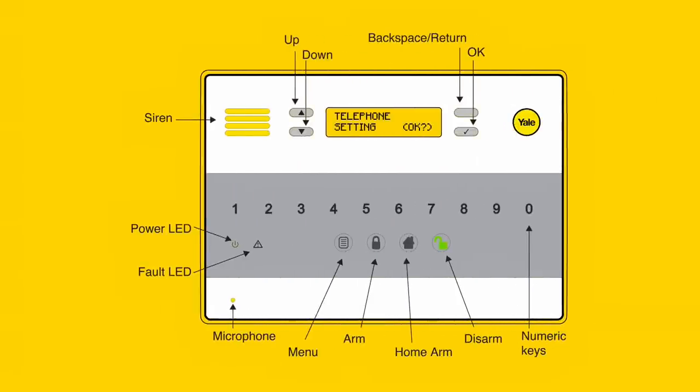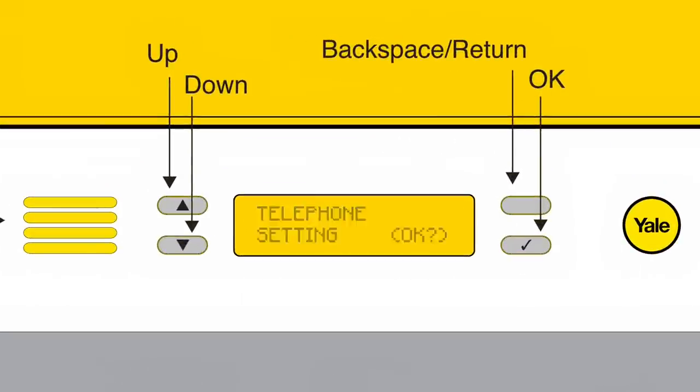If you chose to set up telephone alerts, it is important to test that this feature is functioning correctly. To do so, select test report in the telephone setting option where you will be presented with the numbers stored in your control panel. Select one of the numbers and press the tick button. The control panel should dial out to the nominated number.